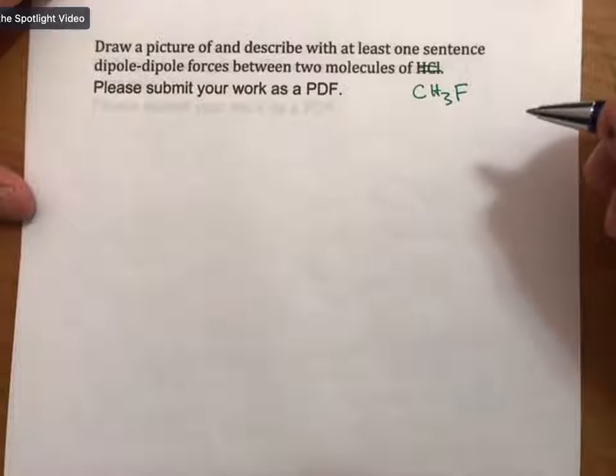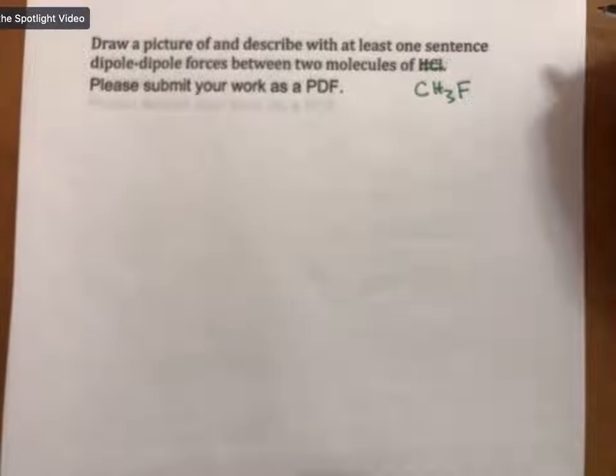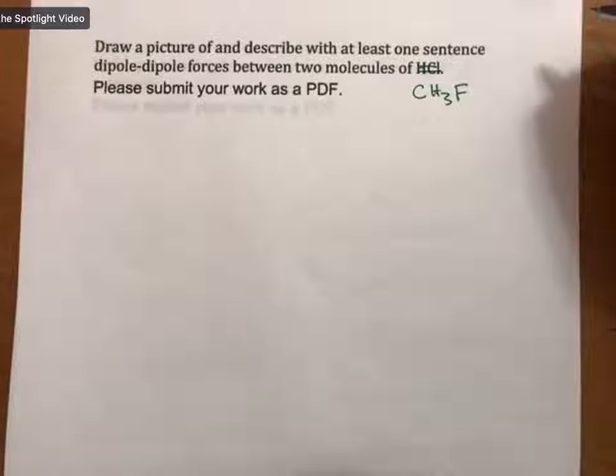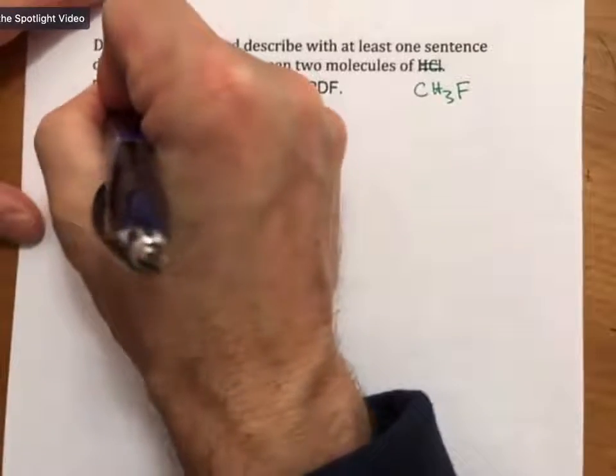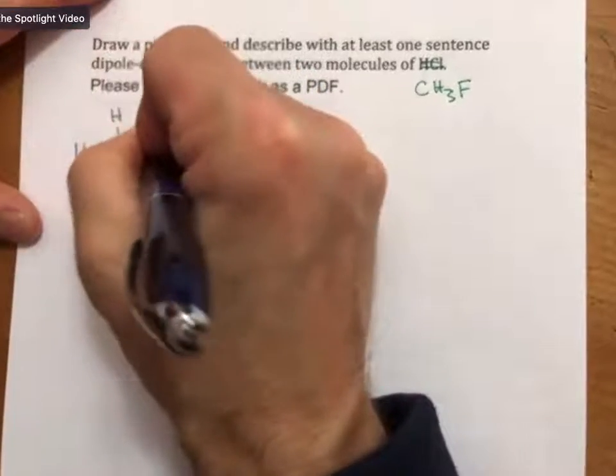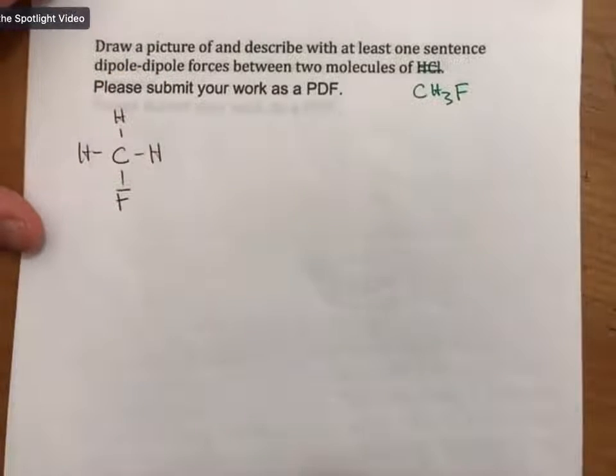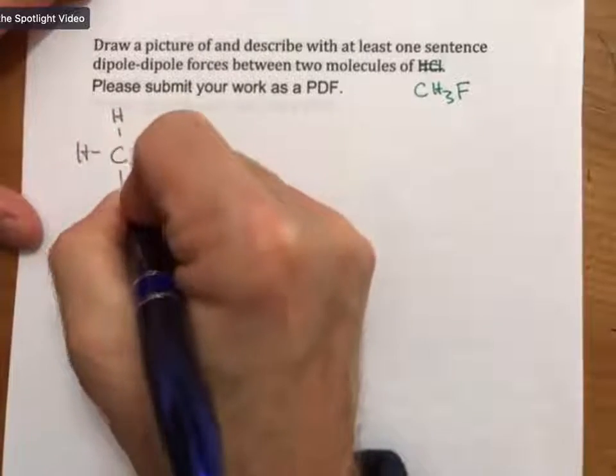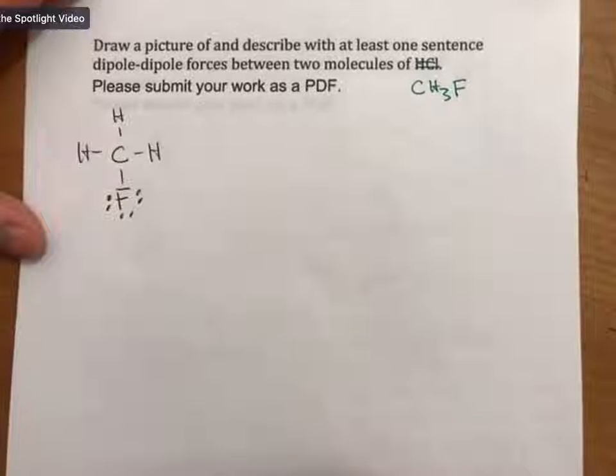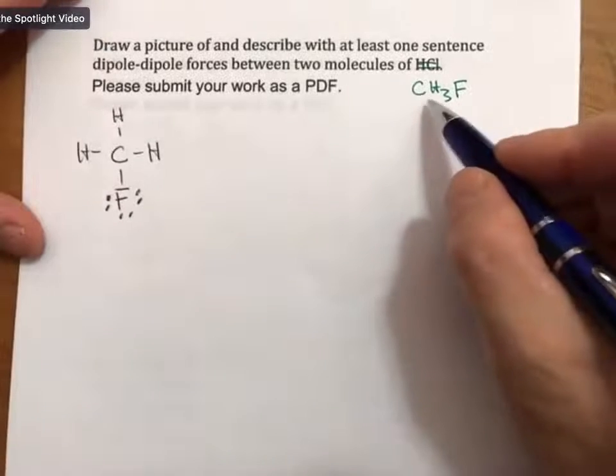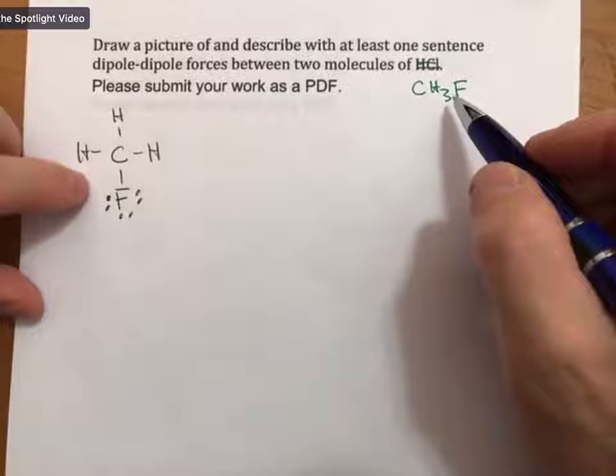Let me draw a Lewis structure for this. Drawing Lewis structures is going to be the key, and best Lewis structures even, is going to be the key to understanding IMF. If you draw the Lewis structure you'll see that the carbon is in the middle with three hydrogens and a fluorine. Because all Lewis structures have all pairs of electrons we put the electrons on the fluorine there. If you count up all the valence electrons you'll see that this is correct.